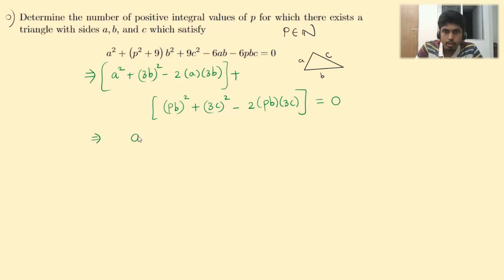Now this implies (a minus 3b) squared plus (pb minus 3c) squared is 0. So sum of two squares is 0 and what does it mean? It means each of them individually must be 0 because we know squares are always non-negative.